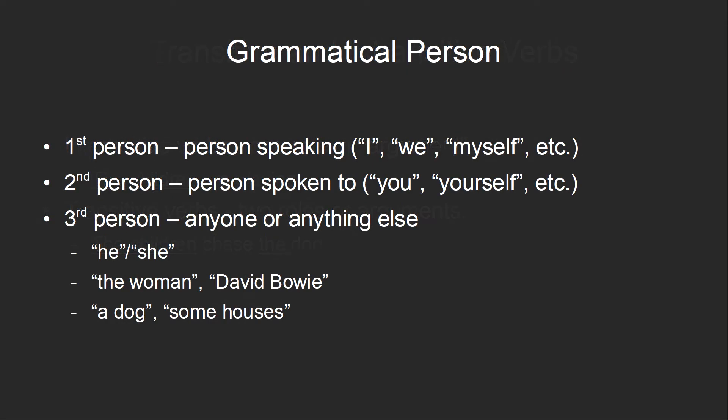The second bit of terminology, which is not as important but will come up several times in this video, is grammatical person. Grammatical person is basically the relationship between who is speaking and who is being spoken about. The first person is the person who is speaking — that's words like I, we, myself, etc.